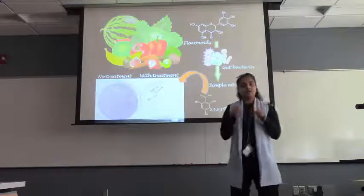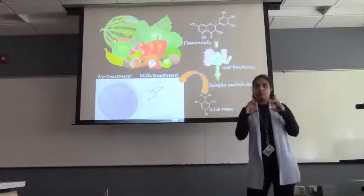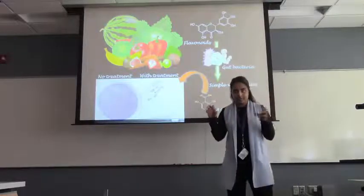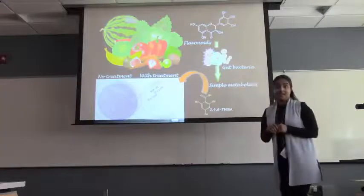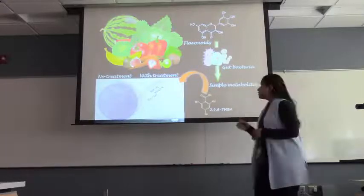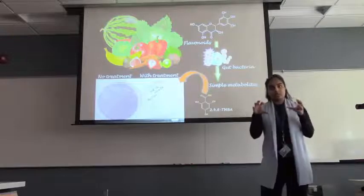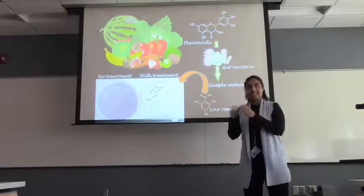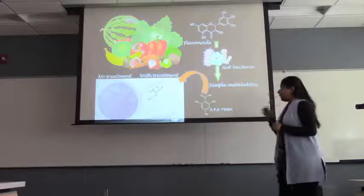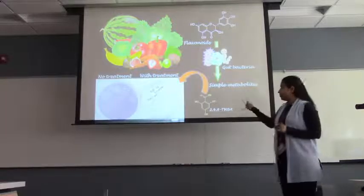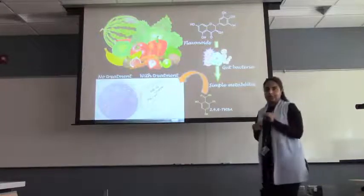And when we ingest food that is rich in flavonoids, flavonoids are broken down into smaller, simpler compounds by the trillions of bacteria that live in our gut. So, we decided to take some of these broken down, simpler compounds and test them for the ability to prevent cancer cell growth. And we found one compound, which was 246-trihydroxybenzoic acid, was able to inhibit cancer cell growth.